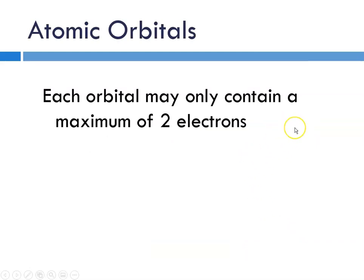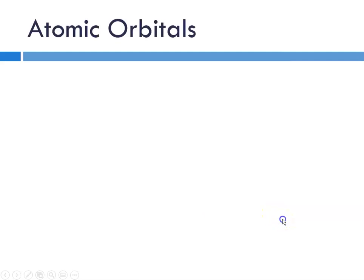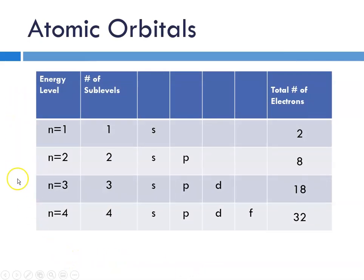Each orbital, regardless of what kind of orbital it is, whether it's S, P, D, or F, may only contain a maximum of two electrons. So with N equals one, there's only one sublevel called S, and it would contain two electrons. So the maximum number of electrons for this level would therefore be two. Since we're only going to worry about N equals one through four for principal energy levels, we can figure this out. At N equals one, the only sublevel is S, there's only one orbital, and it has two electrons.